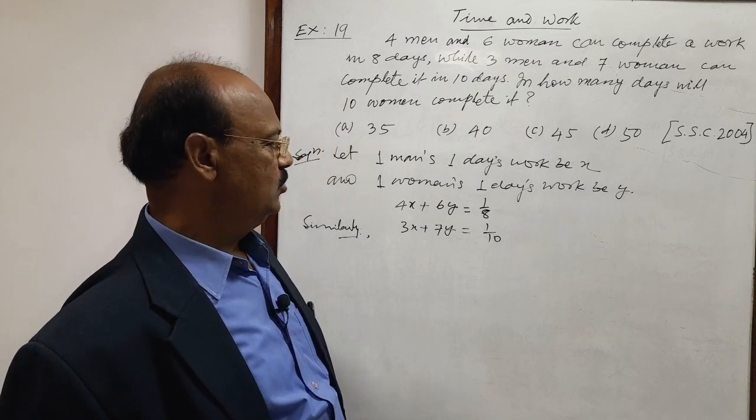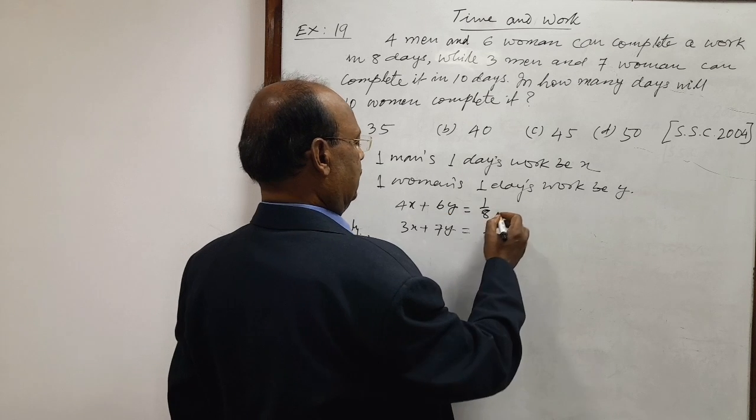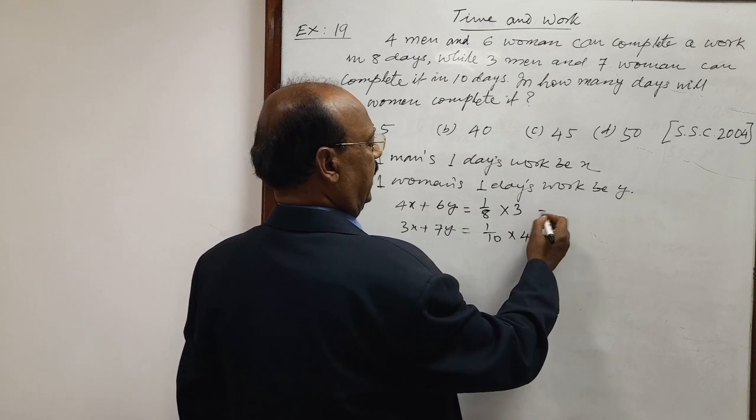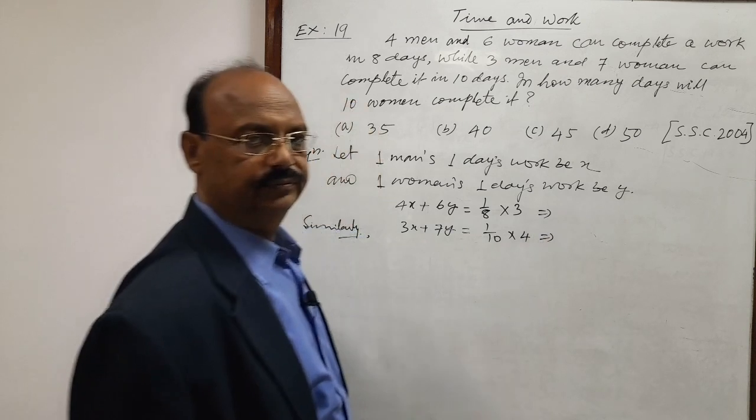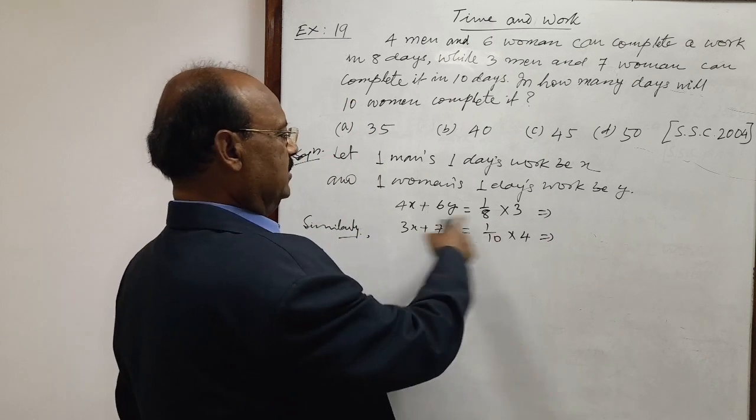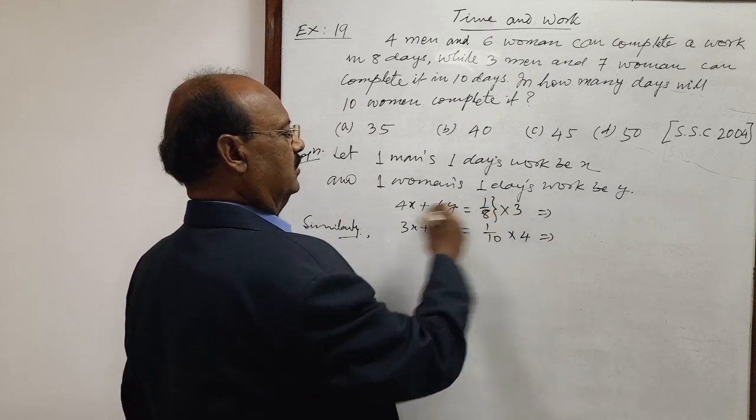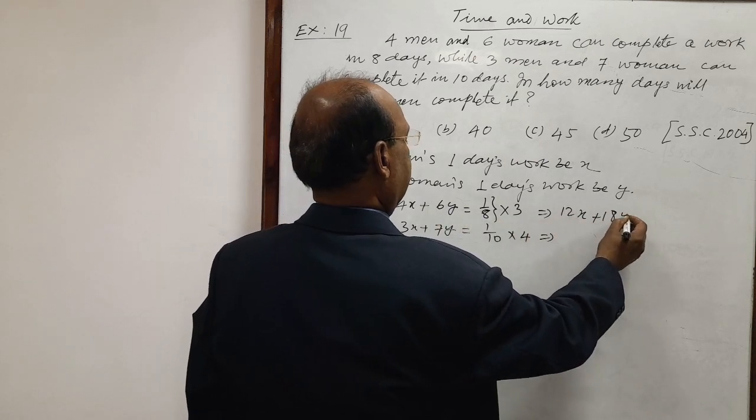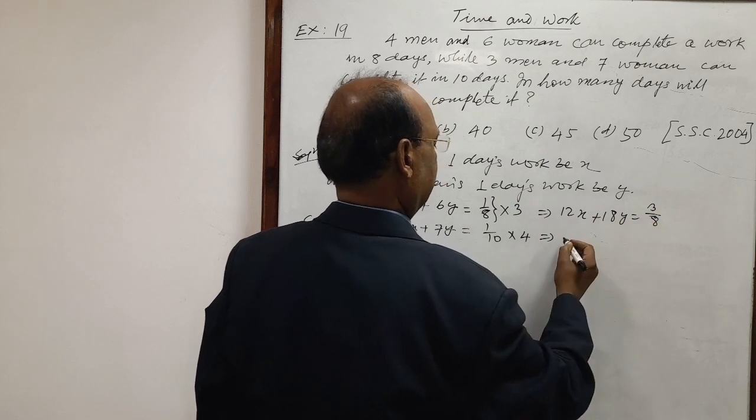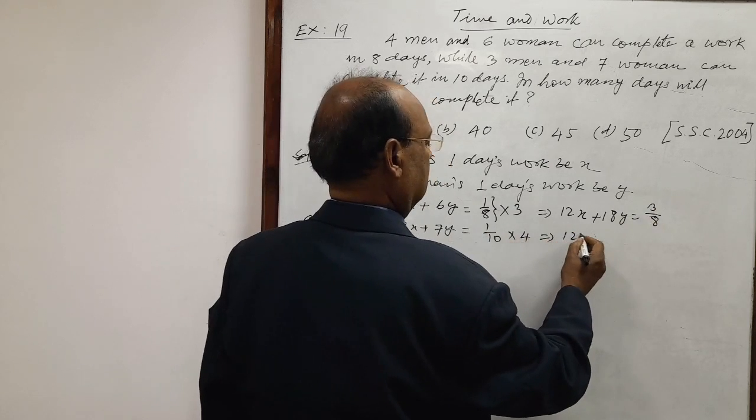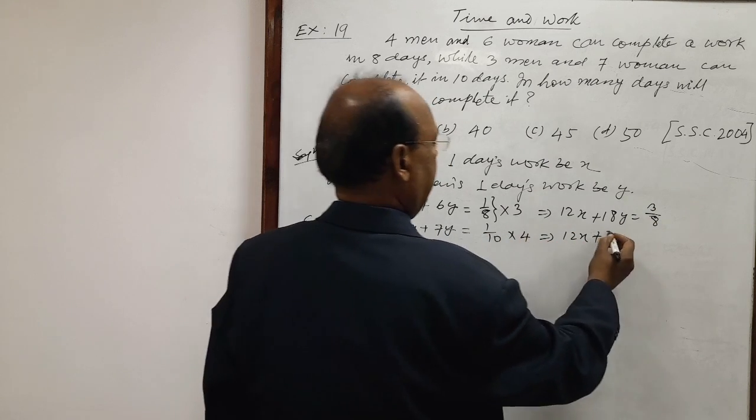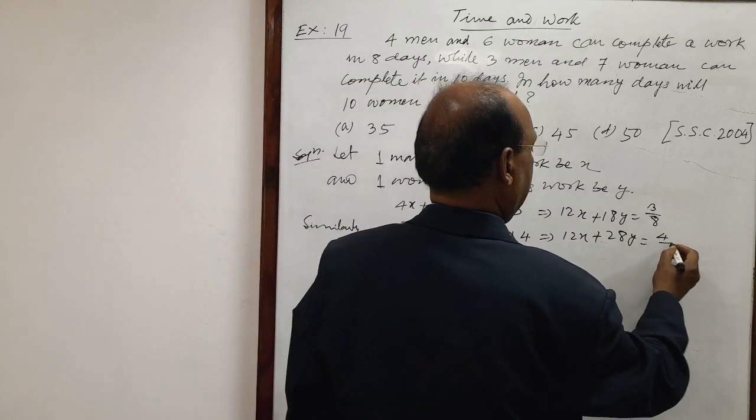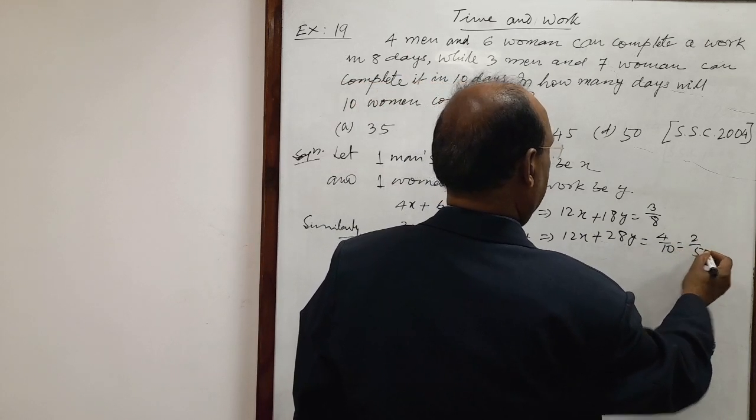Now let us try to solve these two equations. For solving, let us multiply this first equation by three and second equation by four. And by subtracting, we will get the value of y. By multiplying this equation with three, we are getting here 12x plus 18y is equal to three by eight. By multiplying second equation with four, 12x plus 28y is equal to four by ten, that is two by five.